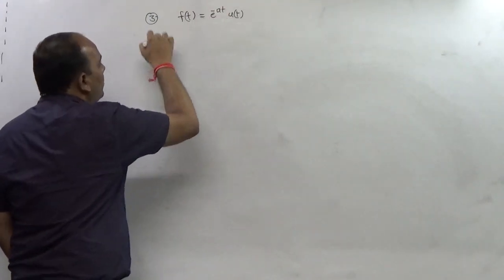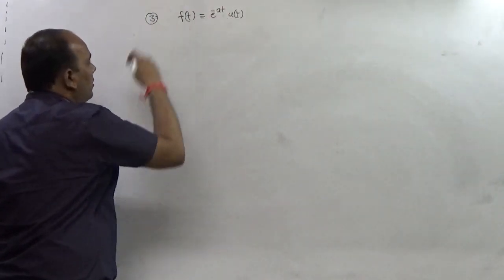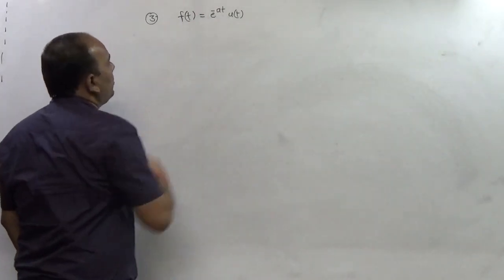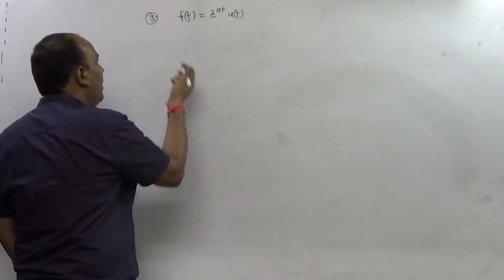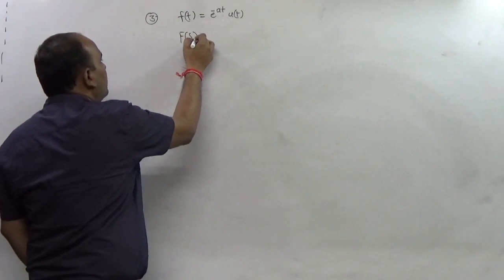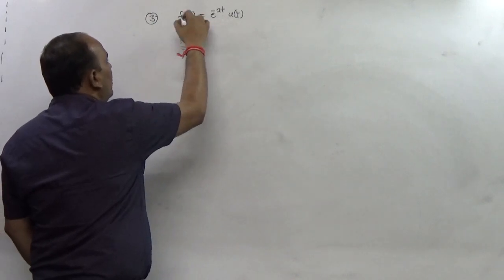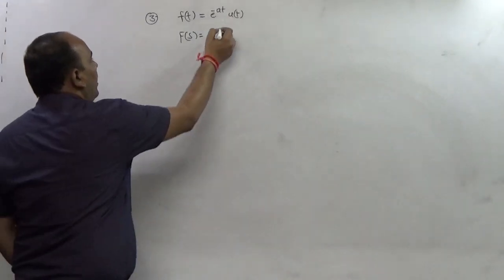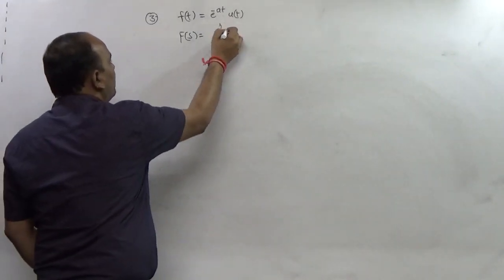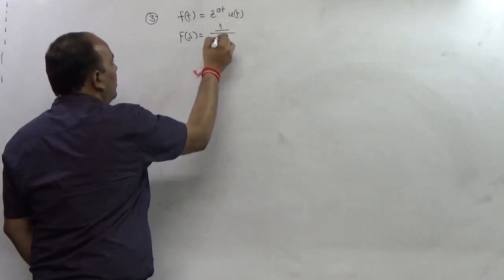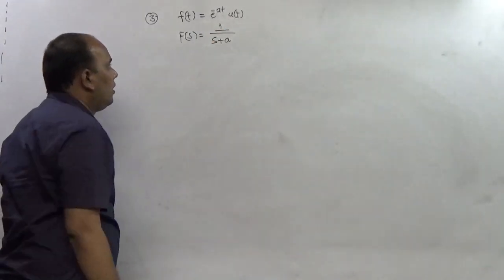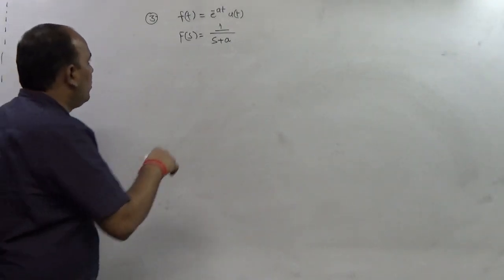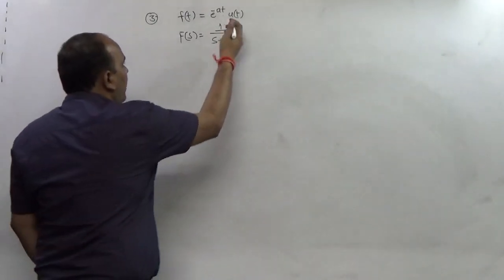In the previous video we saw how to find the Fourier transform of e^(-at)u(t). The result was F(s) = 1/(s + a), but we did not determine the region of convergence.